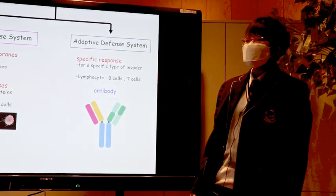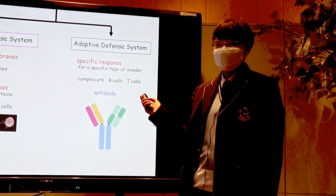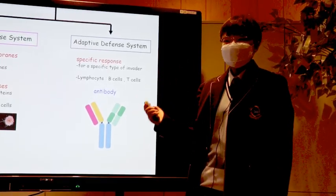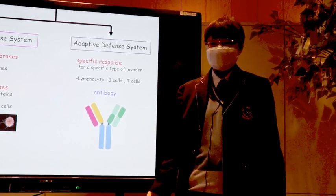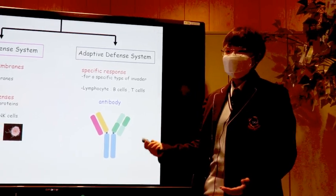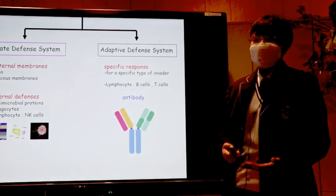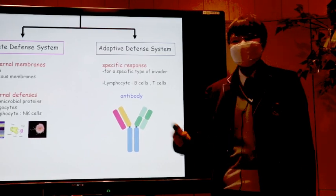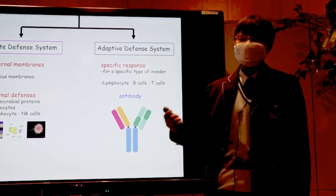Then, there is the adaptive defense system. This is a more systematic and complicated system. Lymphocytes, including B and T cells, which are made in bone marrow, play an important role. Antibody reaction is one of the vital activities that lymphocytes do.